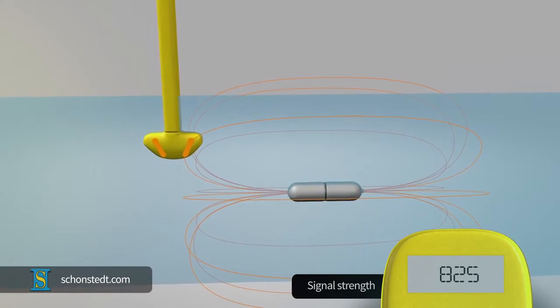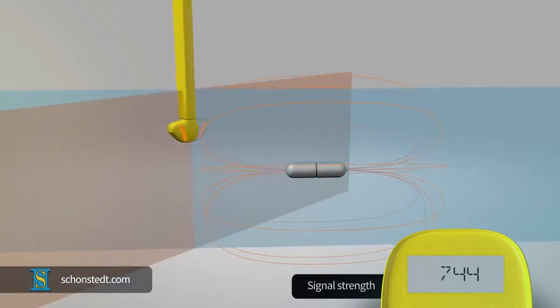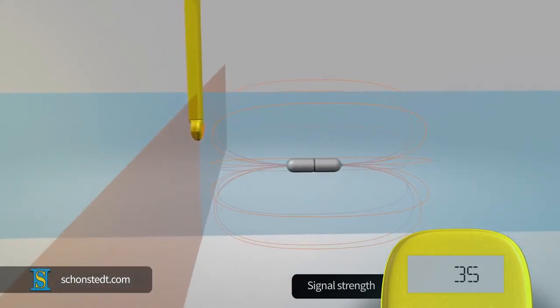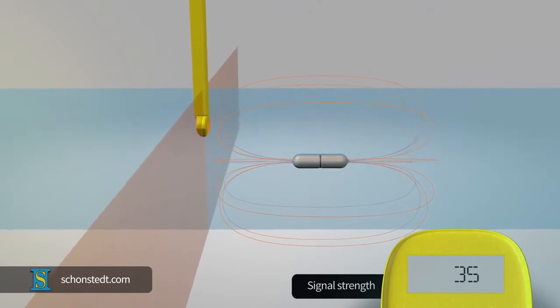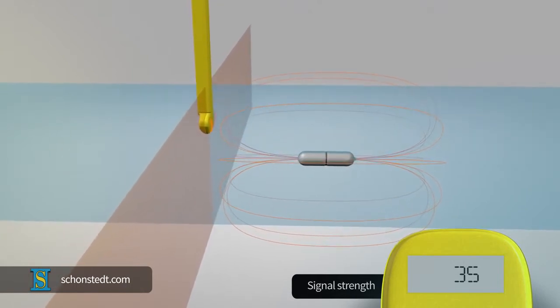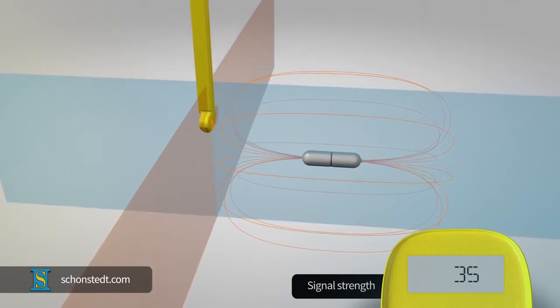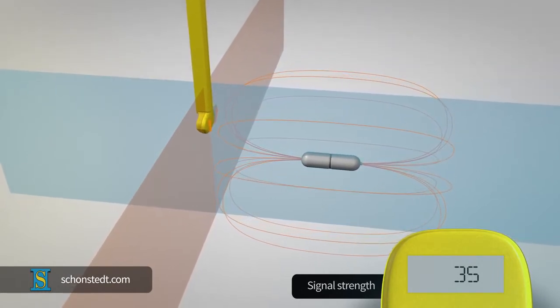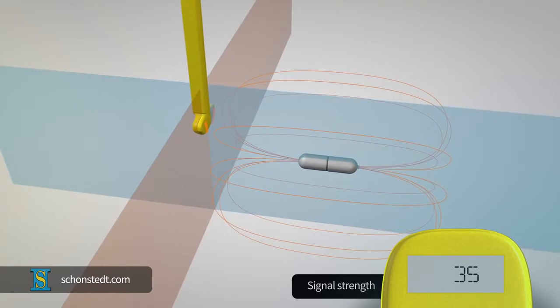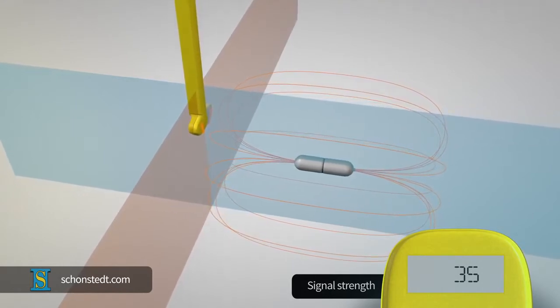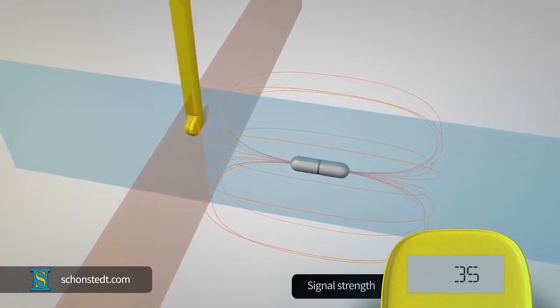By contrast, the signal detected by the sensors is the weakest or null when the axis of the sonde and the axis of the sensors in the receiver are on perpendicular planes. In this case, the field lines of the signal emitted by the sonde are perpendicular to the sensors, generating essentially no signal or a minimal signal.